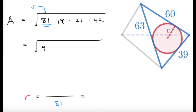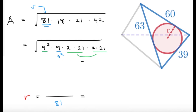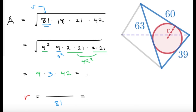We can use some factoring to help. 81 is 9 squared, 18 is 9 times 2, and 42 is 2 times 21 — so we have 21 times 42 which is 2 times 21 squared. This means the product inside the square root is 9 squared times 3 squared times 42 squared. Taking the square root gives us 9 times 3 times 42. Multiplying that out, this equals 1134. So the area of the triangle is 1134.